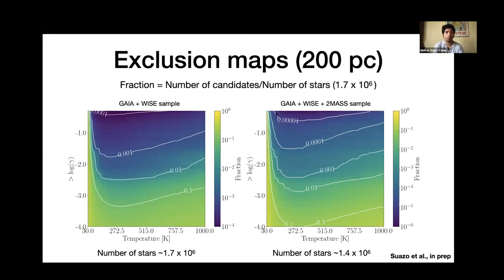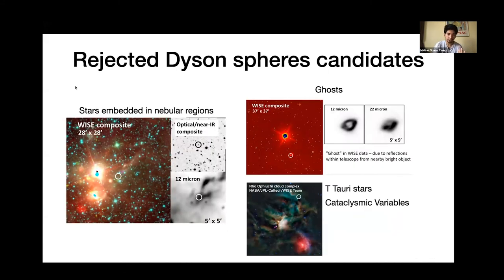Then I proceeded to check what kind of sources we have in this region that are consistent with this Dyson sphere for this range of temperatures and this range of covering factors. And here we have a few examples. Most of them are actually stars embedded in nebula regions. And that's the reason why they have mid-infrared excess. Also, we found some ghosts that are due to diffractions in the camera. And also we found some natural light sources of mid-infrared emission, like T Tauri stars and cataclysmic variables.